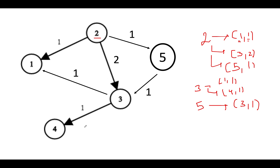I'll be using Dijkstra's algorithm to solve this question. It is essentially BFS, but instead of a regular queue we use a priority queue so that whenever we pull out elements, the decision is based on the cost to reach a node. Since the question asks for minimum time, we use a min priority queue — meaning the element with the lowest cost is always pulled out first.